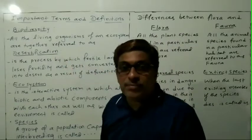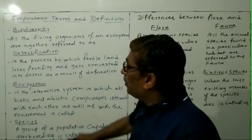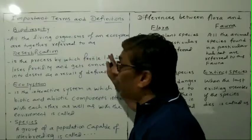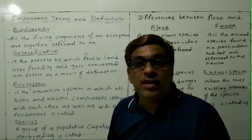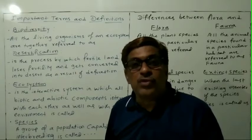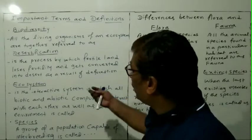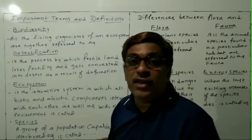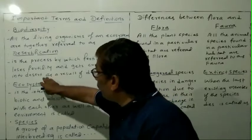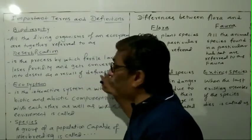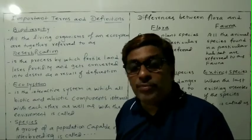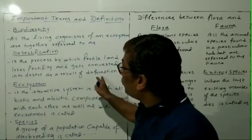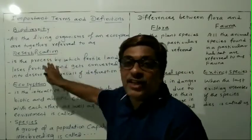The next definition is desertification. Desertification is the process by which fertile land — fertile land means land capable of producing food and grains — loses its fertility and is converted into desert as a result of deforestation, which is cutting of trees and plants. So that is called desertification.